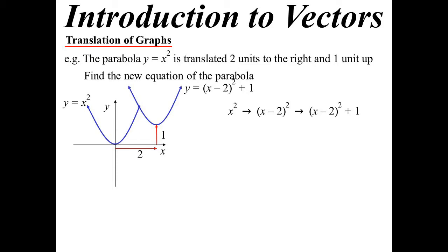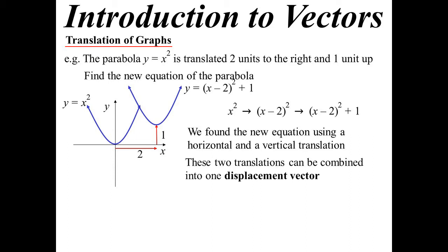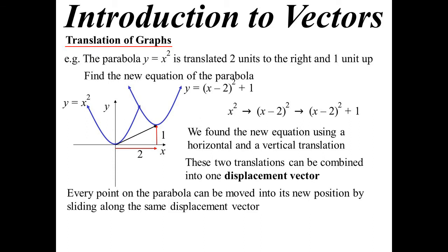So what has this got to do with vectors? We basically did it via a horizontal then a vertical translation. We could have achieved the same thing by just sliding it diagonally. We combine those two into one vector, which we call a displacement vector. So there's the black one — the origin simply went sliding along that black line. It has a horizontal component of two units and a vertical component of one unit. The beautiful thing about vectors is I can apply that to every single point — the same vector.